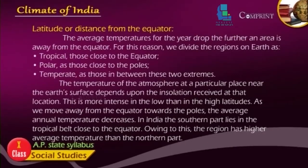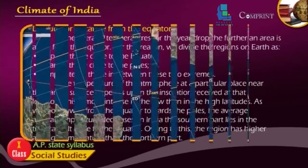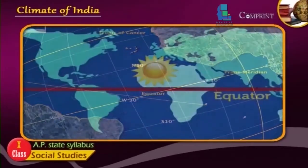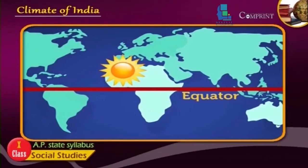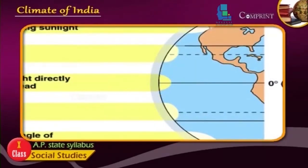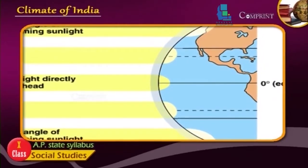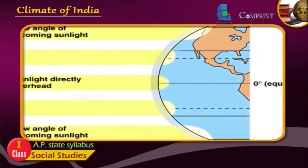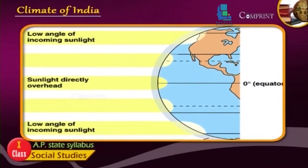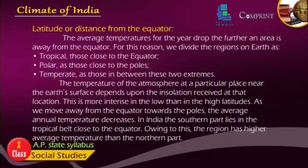The average temperatures for the year drop the further an area is away from the equator. For this reason, we divide regions on the equator as tropical, those close to the equator; polar as those close to the poles; and temperate as those in between these two extremes. The temperature of the atmosphere at a particular place near the Earth's surface depends upon the insolation received at that location.